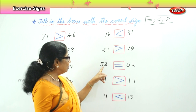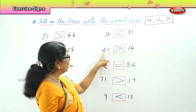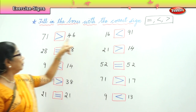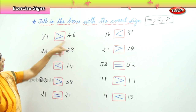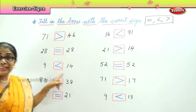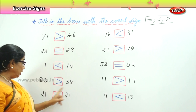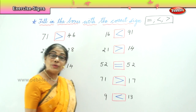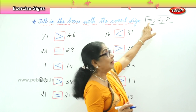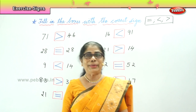Let's review: 71 greater than 17, 52 equal to 52, 21 greater than 14, 16 less than 91, 71 greater than 46, 28 equal to 28, 9 less than 14, 83 greater than 38, 21 equal to 21. We learnt to choose the correct sign — equal to, greater than, less than — when comparing numbers.